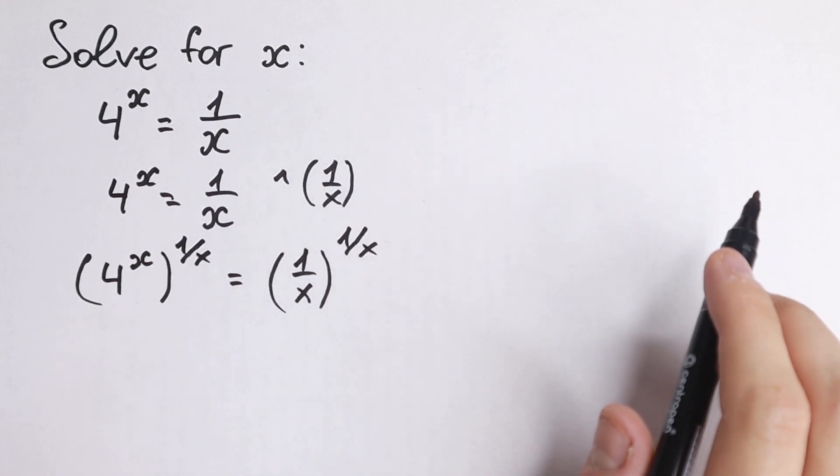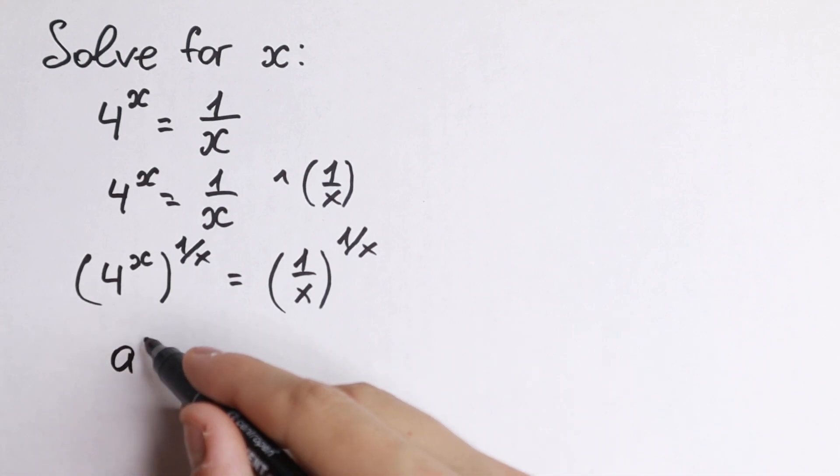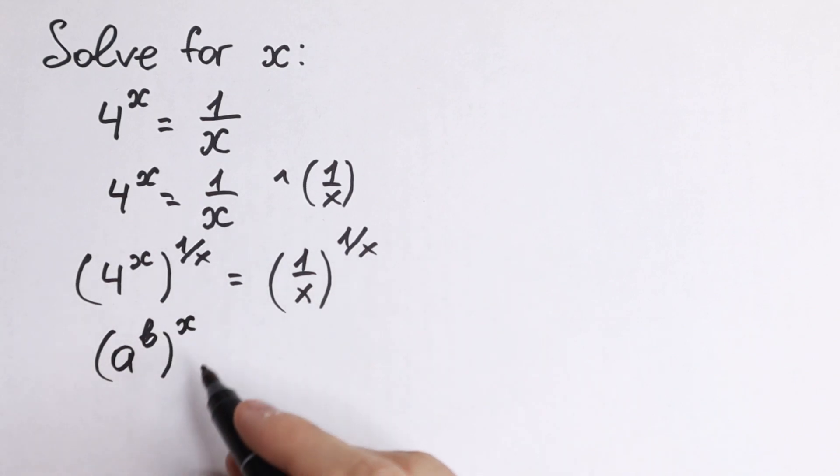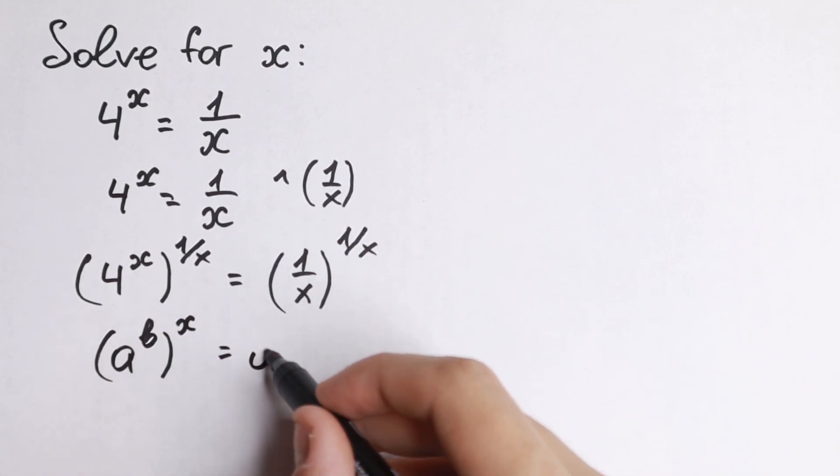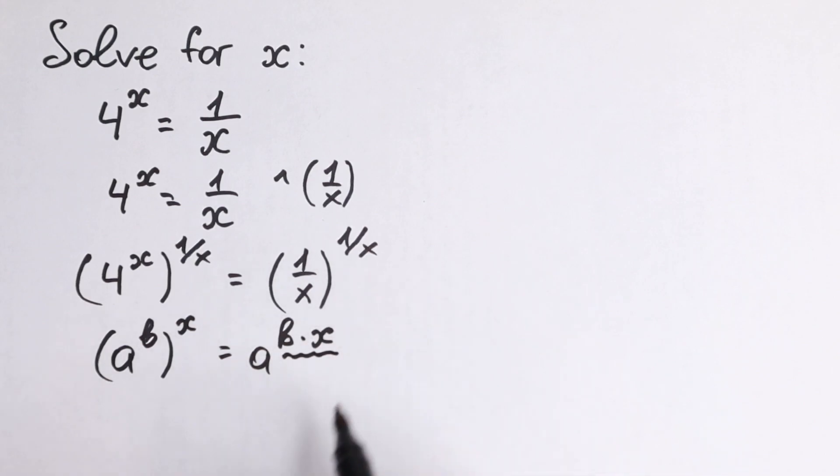So why is this trick really good? Because on the left hand side we have a situation like a to the power b raised to the power x. We all know that we need to multiply these powers. As a result we'll have a to the power b times x. So we multiply our power, this x by 1 over x.